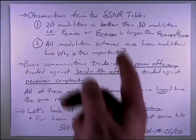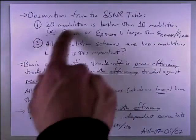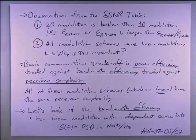So some observations that we can draw based on this SNR loss table. Two-dimensional modulations are better than one-dimensional modulations, as we can see, in terms of the rate at which the SNR loss increases. And all modulation schemes here are linear modulations, which is important because of simple receiver structures.